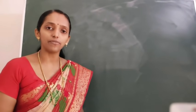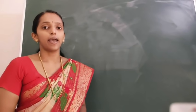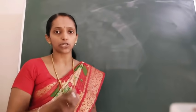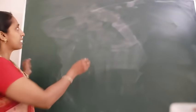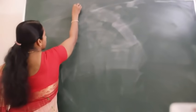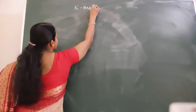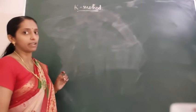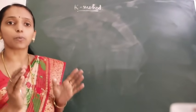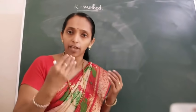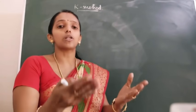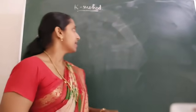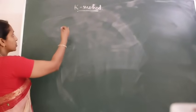Today we are continuing with proportion only, and today we will see another method for solving proportional questions — that is the K method. K method means you will have some conditions given, some quantities, some proportions given. That means if X upon A equals Y upon B equals Z upon C, similarly some types of ratios will be given.